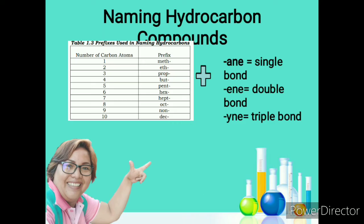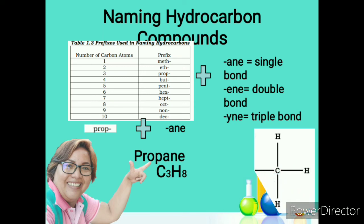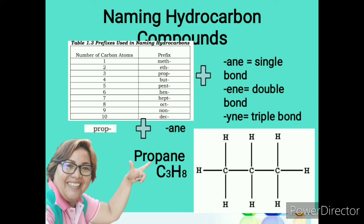Next, we use the prefix prop, which means three carbon atoms. Adding -ane for a single bond gives us propane. Propane has a chemical formula of C3H8 — three carbon atoms and eight hydrogen atoms. Its structural formula shows three carbon atoms, each bonded with hydrogen atoms.